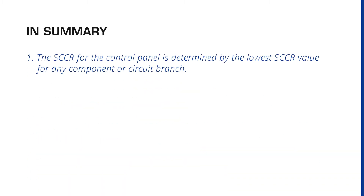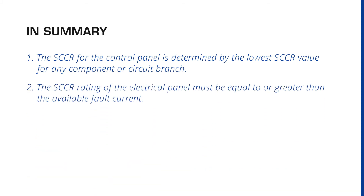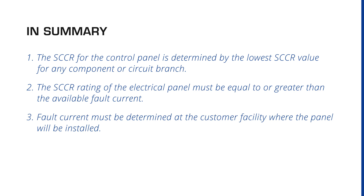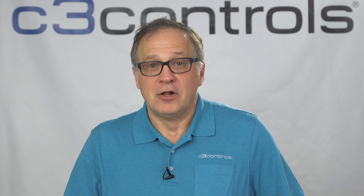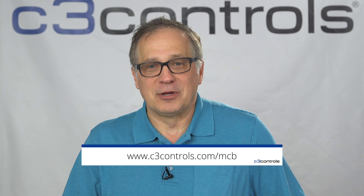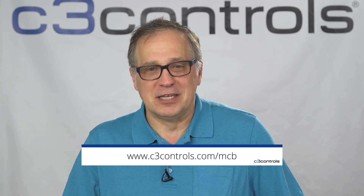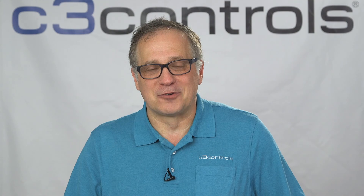To summarize, three things are important to remember when complying with SCCR ratings. One: the SCCR for the control panel is determined by the lowest SCCR value for any component or circuit branch. Two: the SCCR rating of the electrical panel must be equal to or greater than the available fault current. Three: fault current must be determined at the customer facility where the panel will be installed. We here at C3 Controls hope you found this short video helpful. To download a companion white paper and to find other white papers, go to c3controls.com/MCB. Thank you for watching and have a great day from C3 Controls.